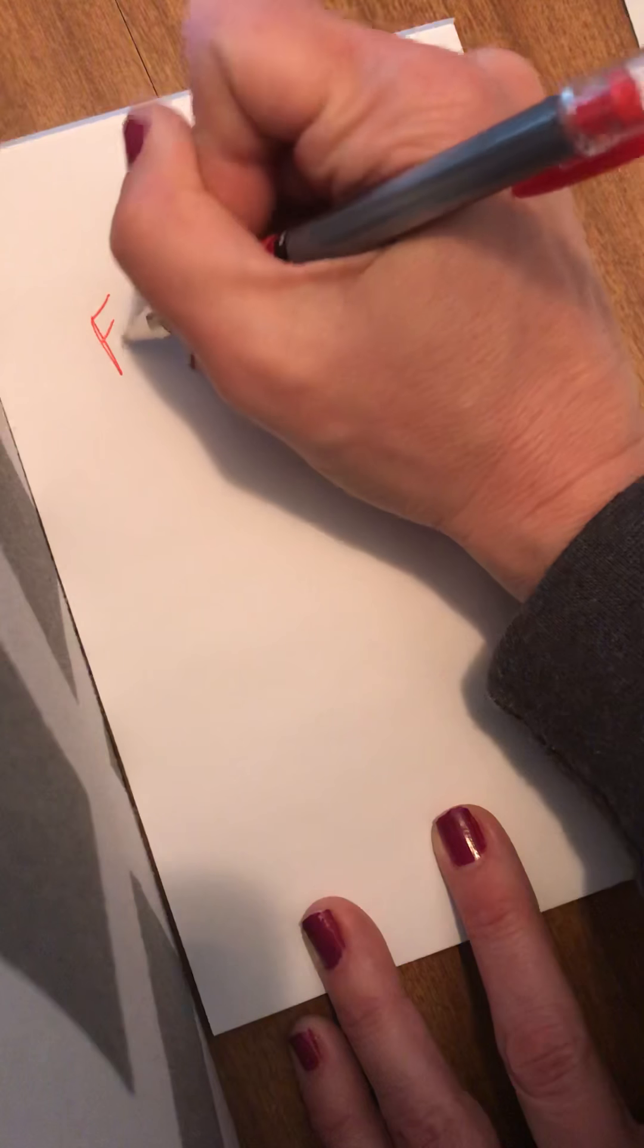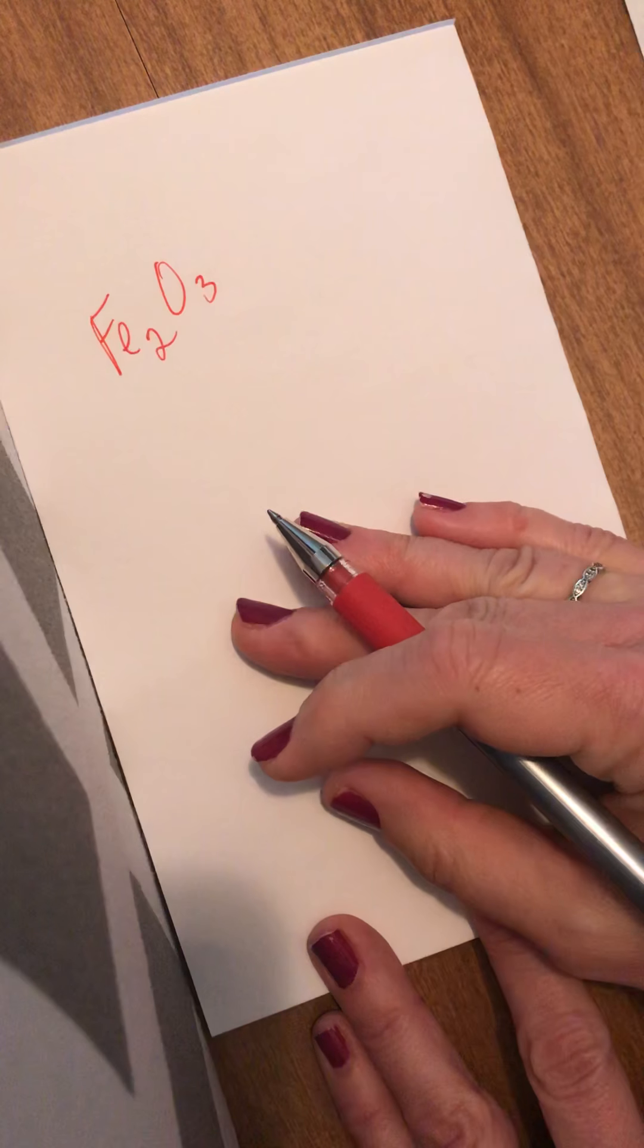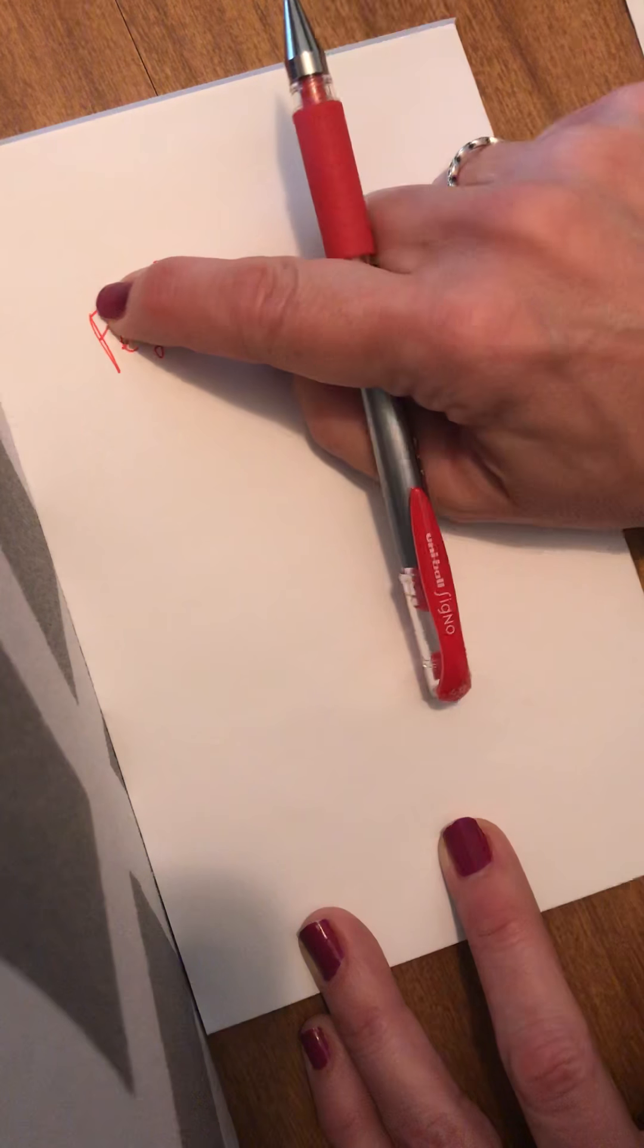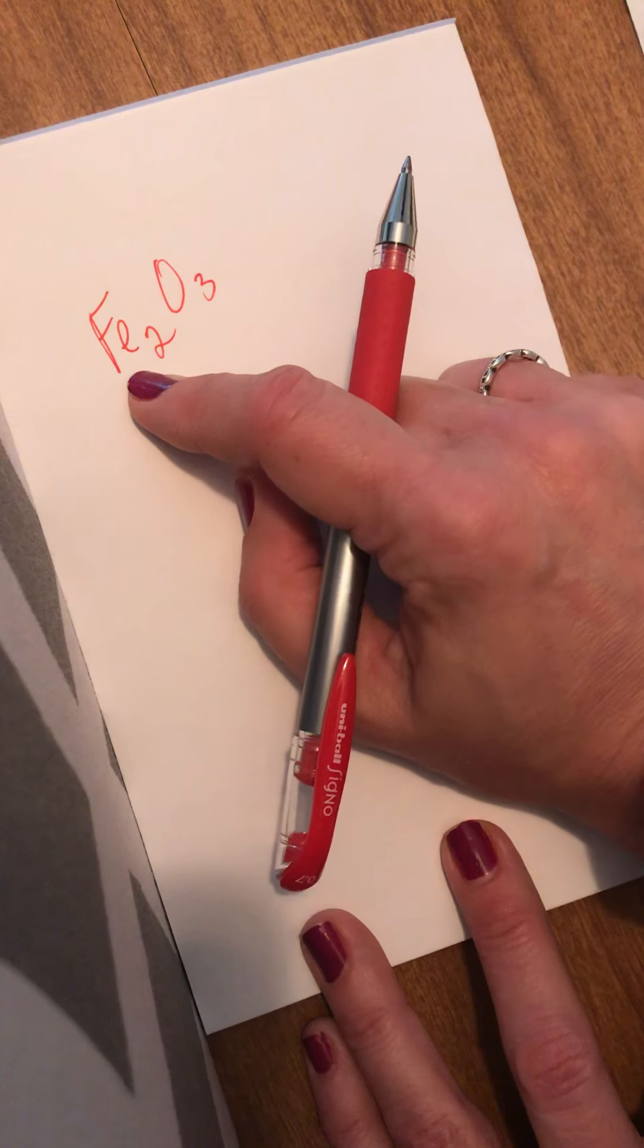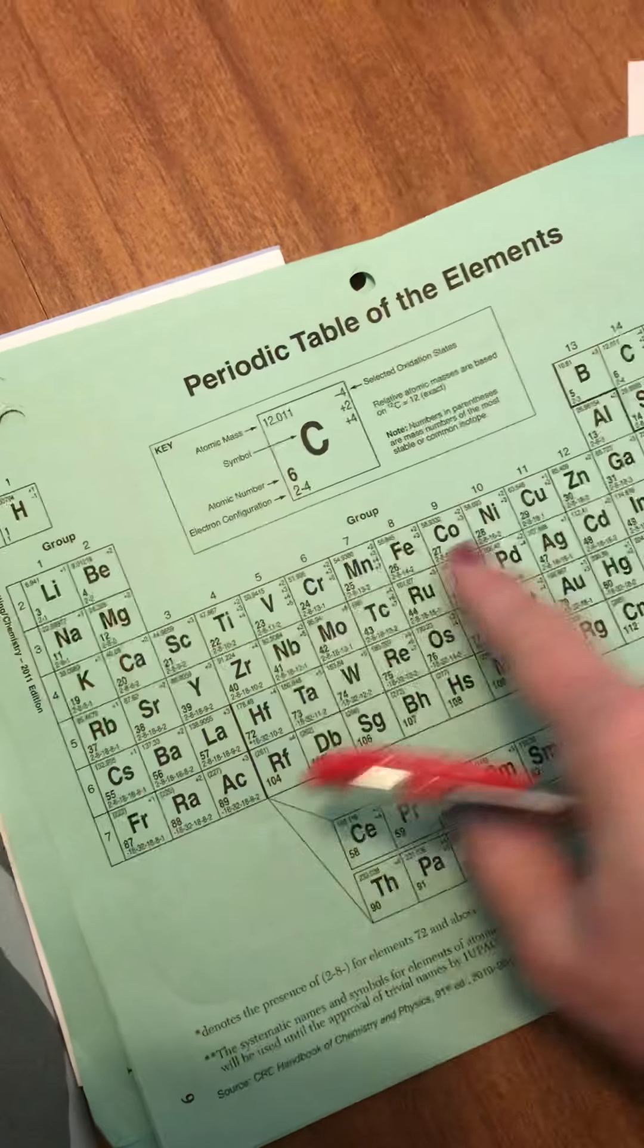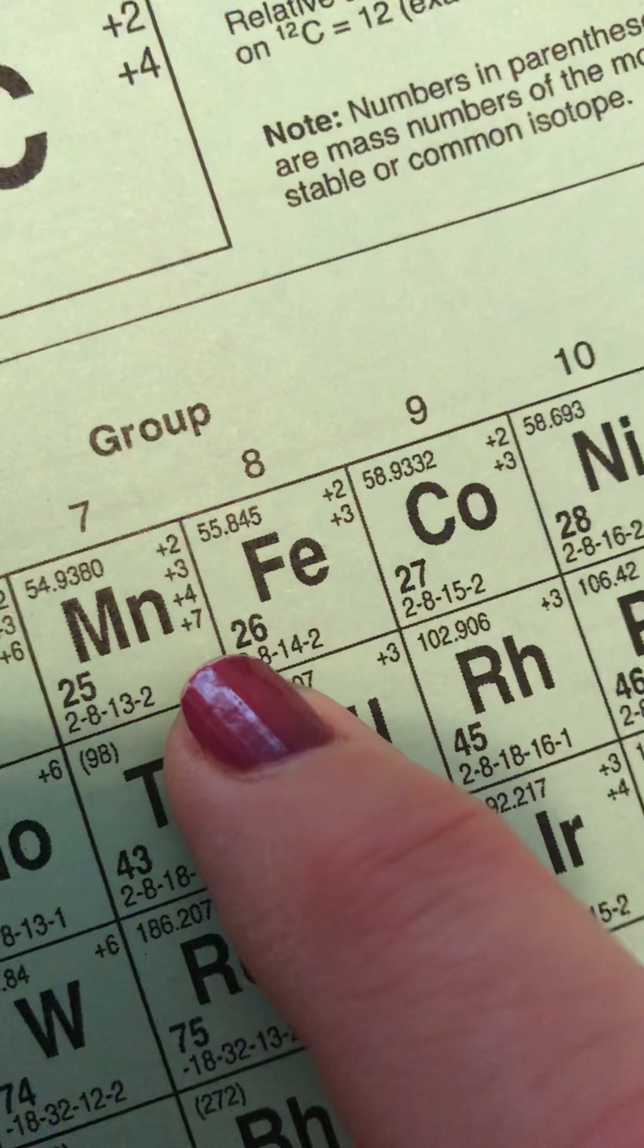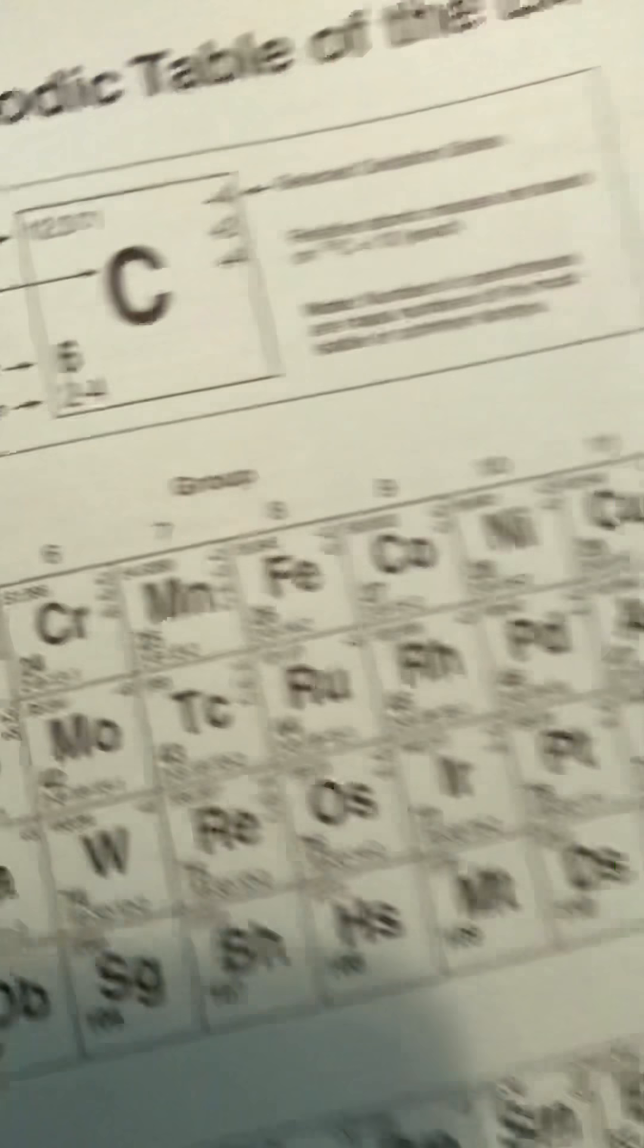If I am given a formula, so let's say Fe2O3, and I need to come up with the name, what I can do is reverse my charges to figure out what this metal's middle name is. So anytime I have a transition element, so those are the elements here in the middle of the periodic table, they have multiple oxidation states. Look at Mn, it's got four different possible charges. Iron's got two, cobalt's got two. There's multiple.